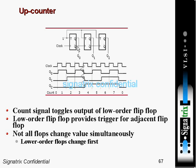Whenever there is a change in value it will enable the next stage and you will get some output. So this counter will count from zero up to one-one-one-one like that. Let me now explain the clock cycles.